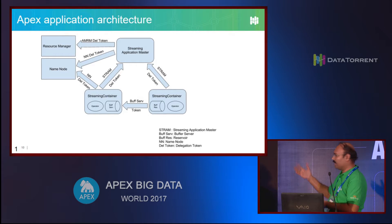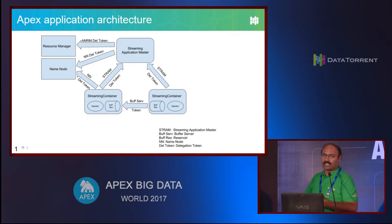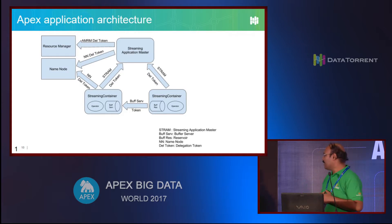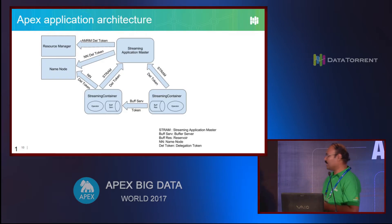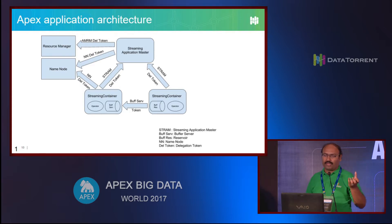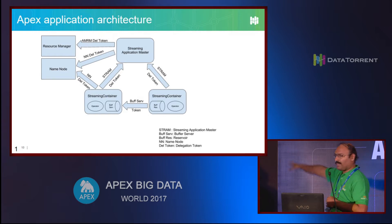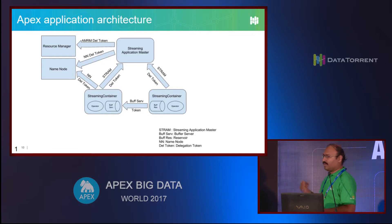The application master needs to talk to YARN and HDFS - that's resource manager and name node. The individual containers talk to the app master periodically to send stats - the operator reports how it's performing. The application master makes those metrics available via web services. Also, if there's dynamic partitioning or scaling going on, the application master will send commands to containers to start new operators. And if there's a failure and an operator is being recovered, its downstream operator will also be reset to the previous checkpoint. That path of communication between container and app master should be authenticated as well.